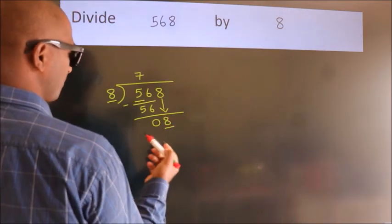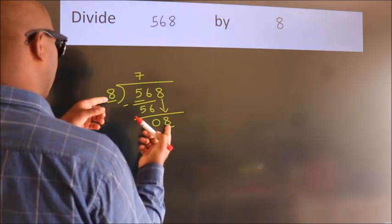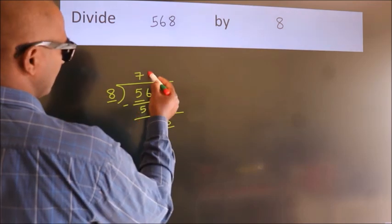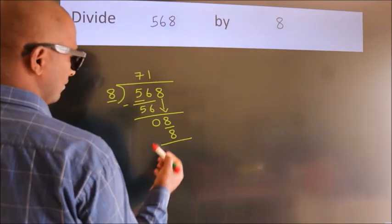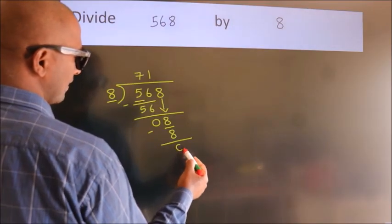When do we get 8? In the 8 table. 8 times 1 is 8. Now, we subtract and we get 0.